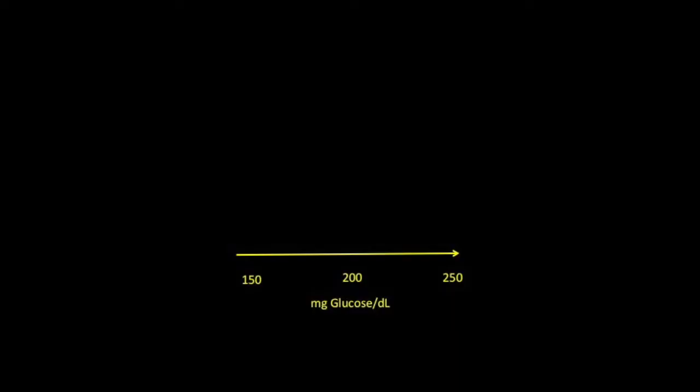Suppose you apply this device to a drop of your blood and find that it's a bit on the high side, say 215 milligrams of glucose per deciliter of blood. Is some course of action appropriate? Before doing anything drastic, you might be interested in knowing how good a number that is. That is, how close can you expect that value to be to the true concentration of glucose in your blood?